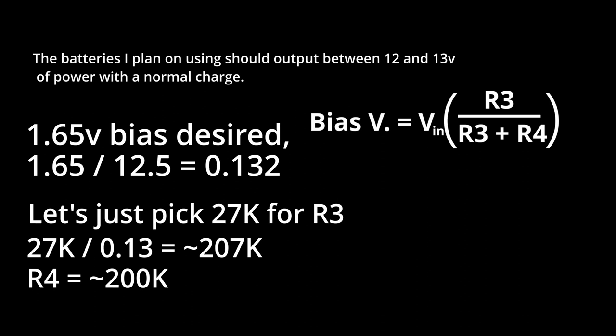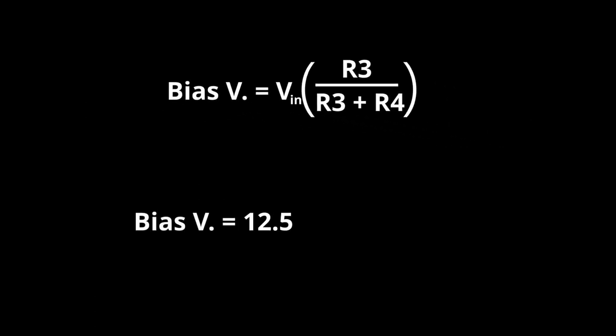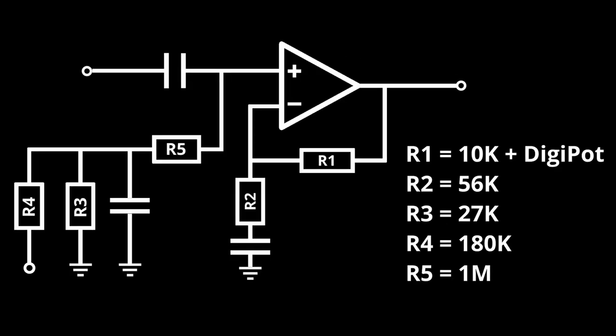I have 180 kOhm resistors, so let's just use those. 12.5 times 27 divided by 27 plus 180 equals 1.63. So this is close to perfect, and our bias should now be proper for the ESP32.